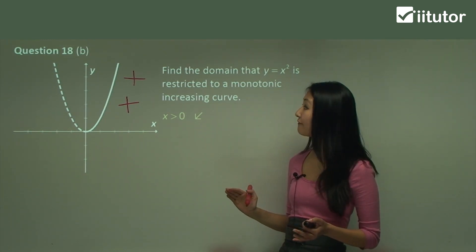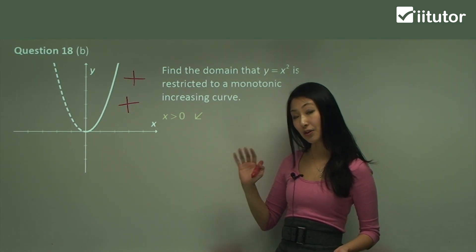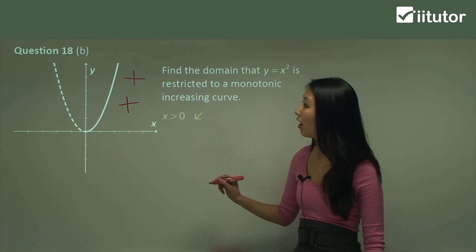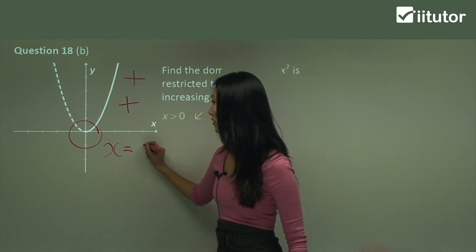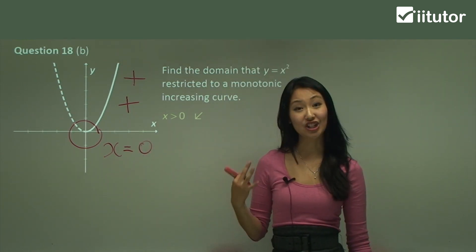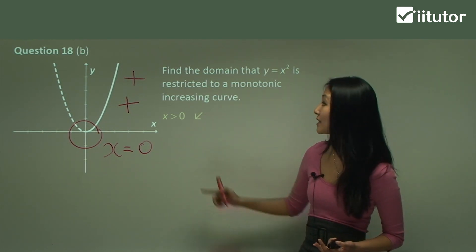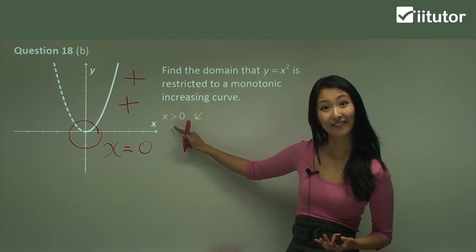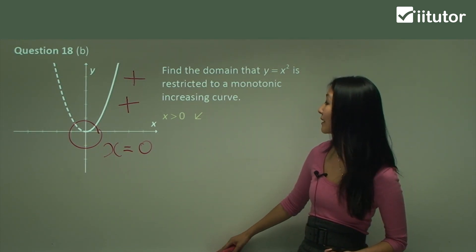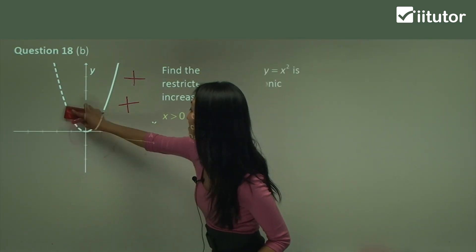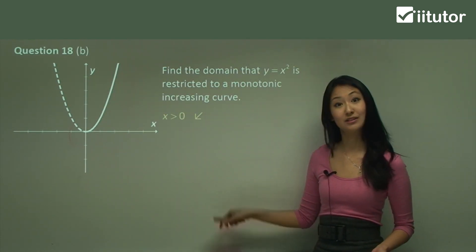Notice I've only written x is greater than 0, not x equals 0. That's because the point x equals 0 is actually a stationary point — it is neither increasing nor decreasing. So that's why we don't include it. Remember: at a stationary point, the function is neither increasing nor decreasing. Therefore the domain is only x is strictly greater than 0.